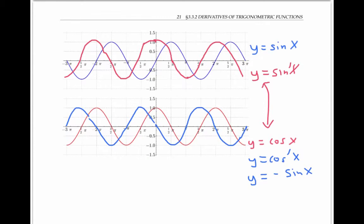So we have graphical evidence that the derivative of sine x is equal to cosine of x, and the derivative of cosine of x is equal to negative sine of x. For proofs of these facts, please see this separate proof video for this section.